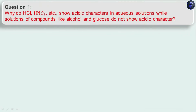Our first question: why do HCl, HNO3, etc. show acidic character in aqueous solution, while compounds like alcohol and glucose do not show acidic character? This question is taken from activity 2.9 — if you want to watch it, click the I button.